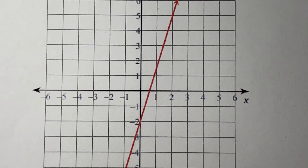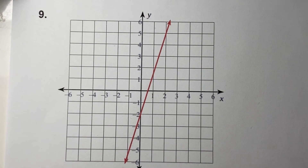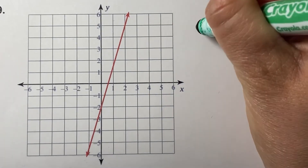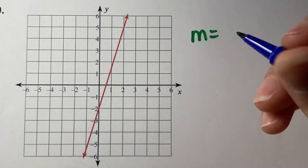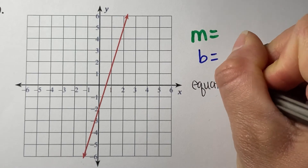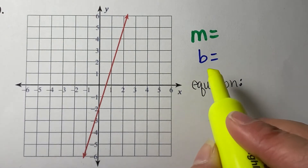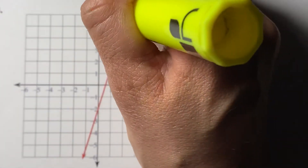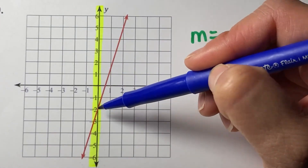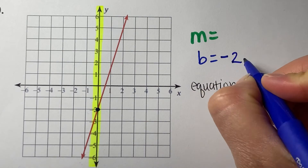Here's one more example. I'm going to zoom out so you can see the entire graph. Again, to write the equation we need to identify m, the slope, and b, the y-intercept, and then write the equation. I'm going to look at b first so I can use that point to find my slope. B is the y-intercept where it crosses on the y-axis. Here, this line crosses at negative 2 on the y-axis, so b represents negative 2.